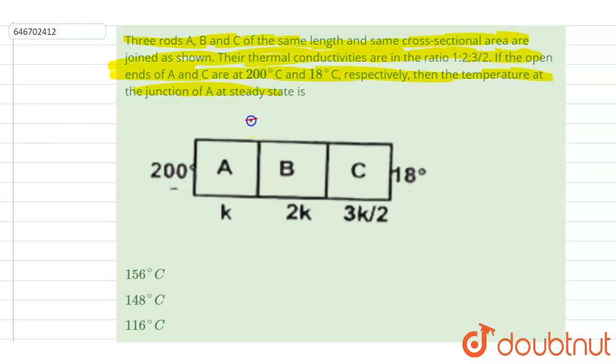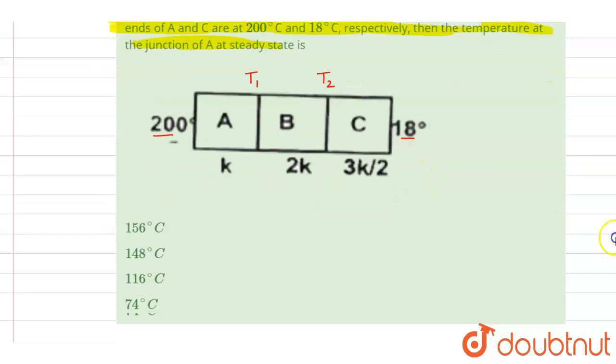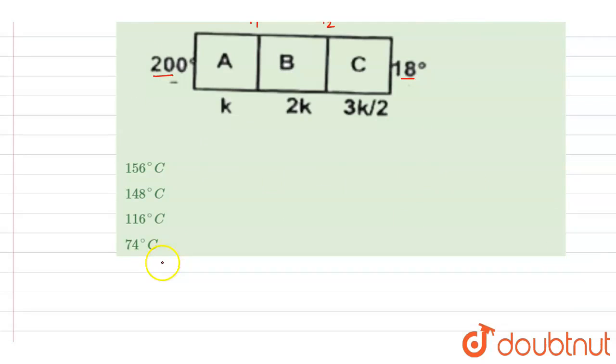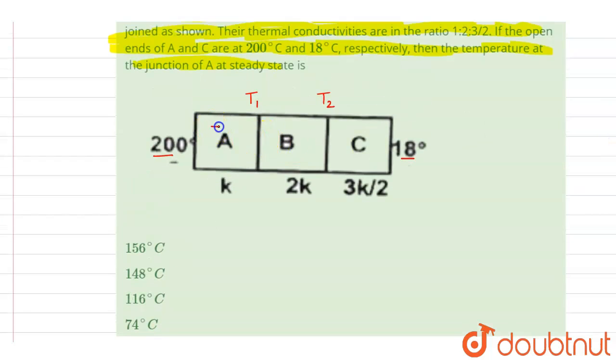So we want the temperature at this point. Let's say T1, and let's say here the temperature is T2. At these two points the temperature you can see. If I write down the heat flow, the current through them will be the same.